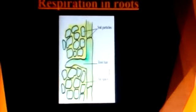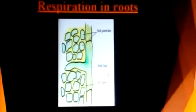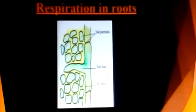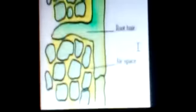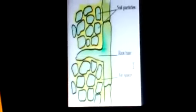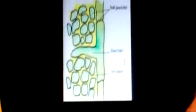Like all other living cells of plants, root cells also need oxygen to generate energy. Roots take up air from the air spaces present between the soil particles. This is how roots get oxygen.